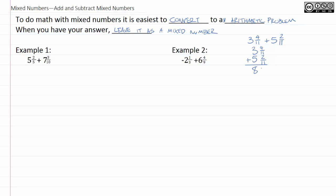So, 3 plus 5 is 8. 4 elevenths plus 2 elevenths is 6 elevenths. And that's actually the whole problem. You're done.